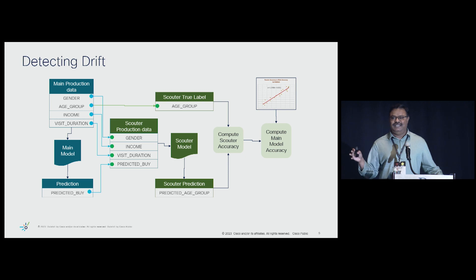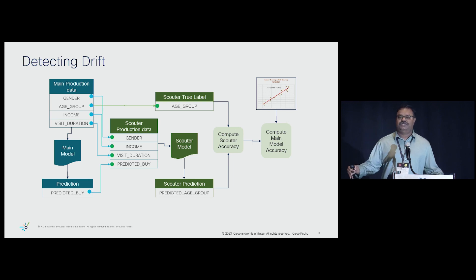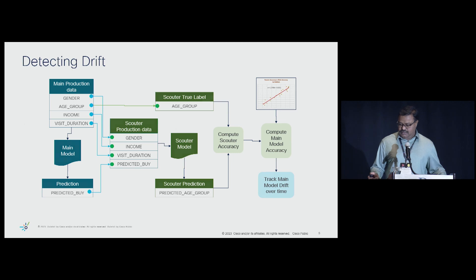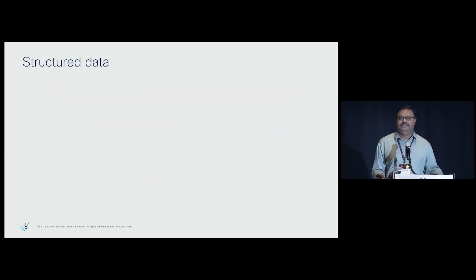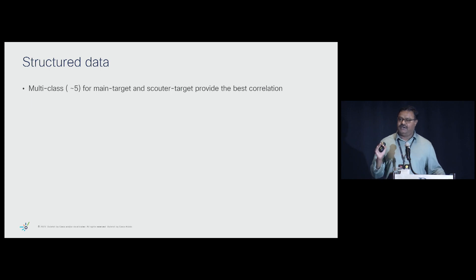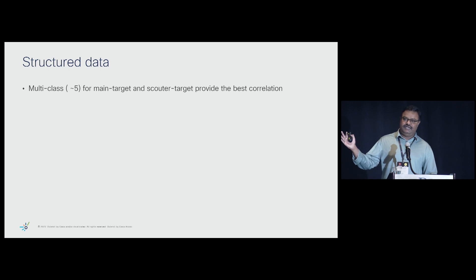So far that was the hypothesis — what we thought might work. From our experiments with structured data, the biggest finding was that multi-class main targets and Scouter targets give the best correlation. When both the Scouter target and the main target are multi-class variables, we get the best correlation — a nice linear regression equation with less error — and we are actually able to predict the model's accuracy very well.